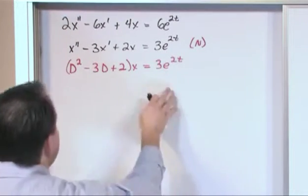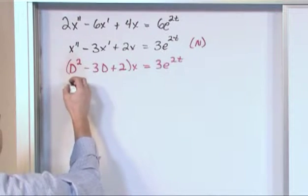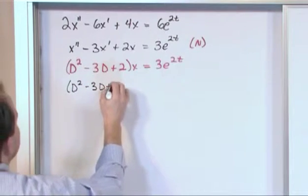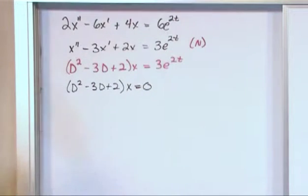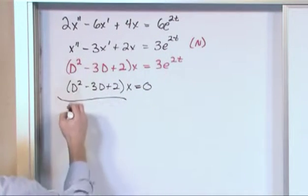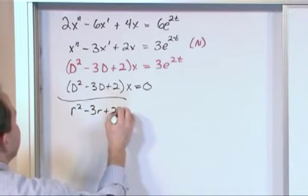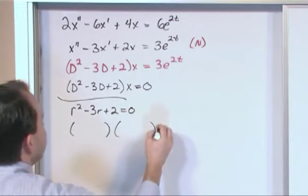The first thing you really want to do after you write in operator notation is solve the related homogeneous version. So you'll have D squared minus 3D plus 2 operating on x equals 0. We take this, we throw it away. This is kind of what we do in every one of these problems. So we want to solve this. What you'll have is r squared minus 3r plus 2 and you set it equal to 0. So we just got to find the roots. This is very easy to factor.